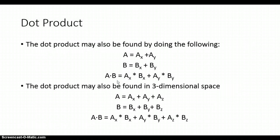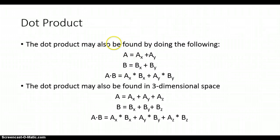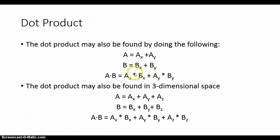Another way to find the dot product of two vectors — if the vectors are given in rectangular form in a two-dimensional space — we multiply the x components from both a and b, multiply the y components from both a and b, and then sum those two terms together to get the dot product.